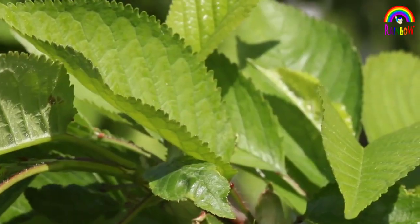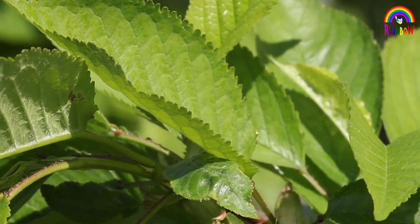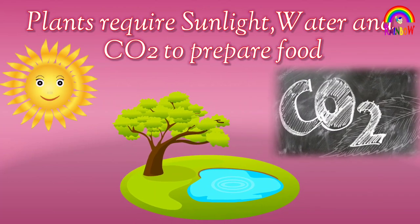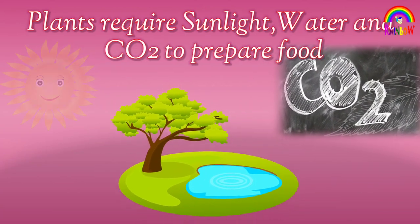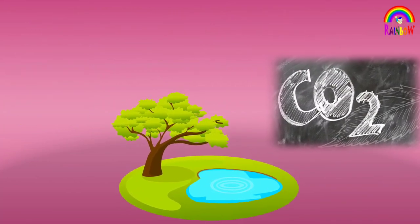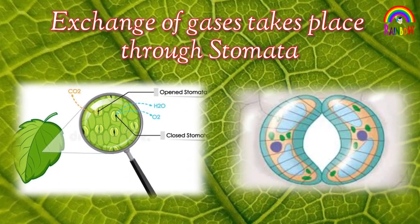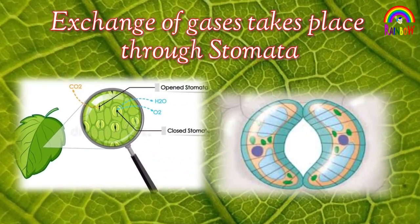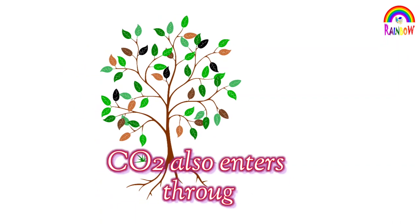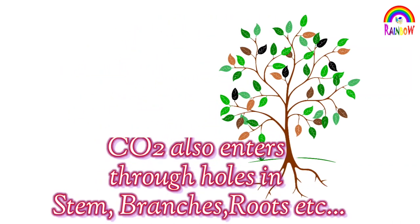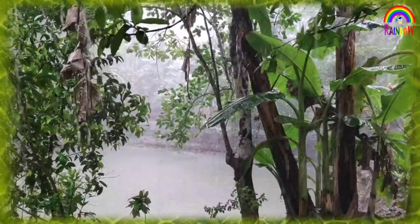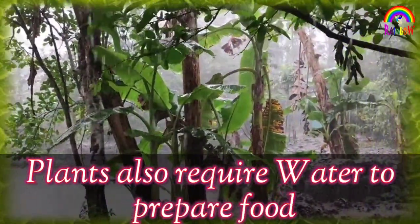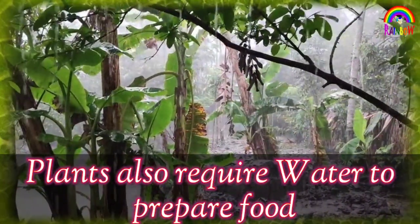Just as we need rice, vegetables, and oil to cook our food, plants also need a few things. Plants prepare their own food using sunlight, water, and carbon dioxide. Carbon dioxide enters through tiny holes in plant leaves called stomata. Carbon dioxide also enters plants through holes in the stem, branches, and roots.